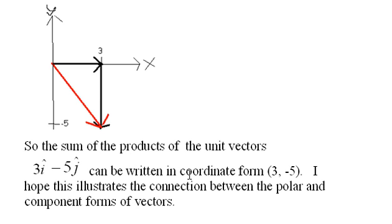I hope this illustrates the connection between polar and component forms. So this one is 3i - 5j, and the head of this vector is at (3, -5).